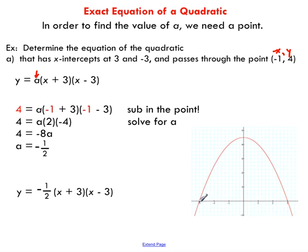Now we look at our x-intercepts, this thing passes through negative three and three. Does it pass through the point negative one, four? It certainly does. That point's right here. So we need that point to sort of nail down our quadratic.